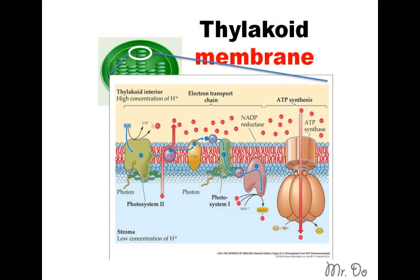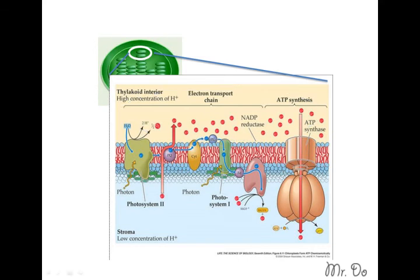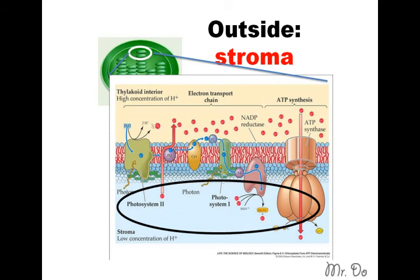What you're looking at is the thylakoid membrane. That whole thing in the middle — that's the membrane. This is the inside of the thylakoid. And this is the stroma, which is on the outside. The thylakoid would be this whole structure, including the membrane part. This whole area is the inside of the thylakoid, and everything outside of the thylakoid is the stroma.